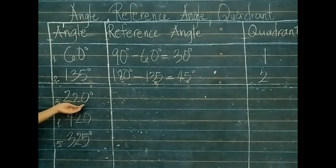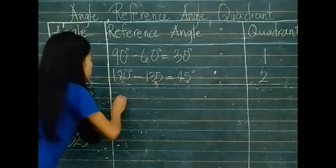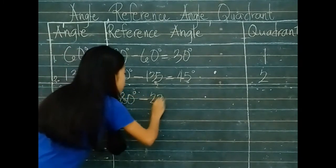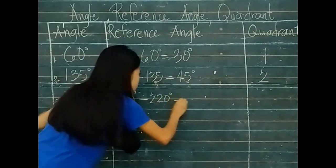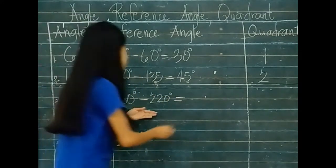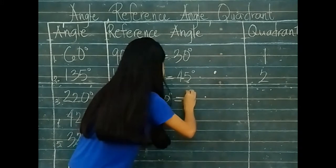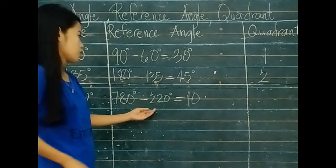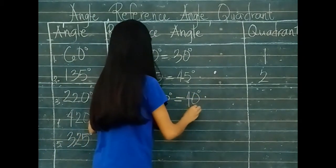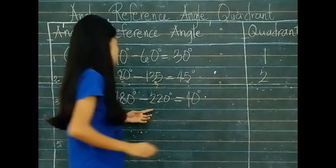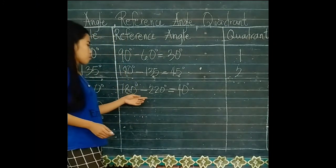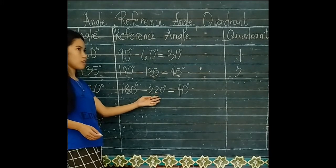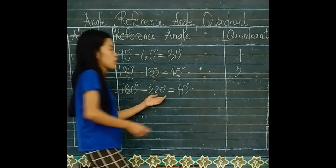Next, for 220 degrees: 220 degrees minus 180 degrees gives the reference angle, and 220 degrees is in Quadrant 3.